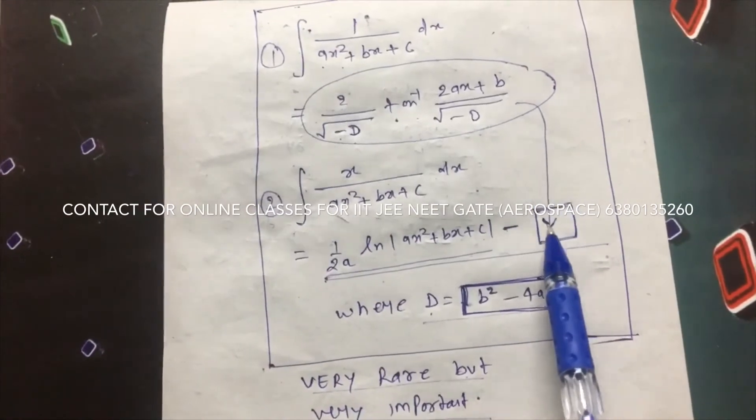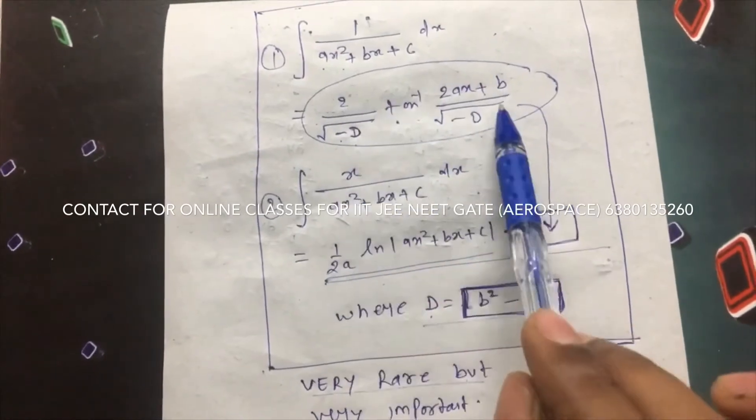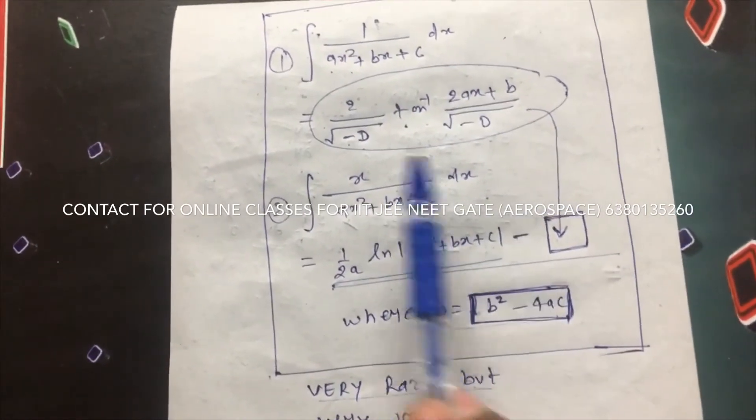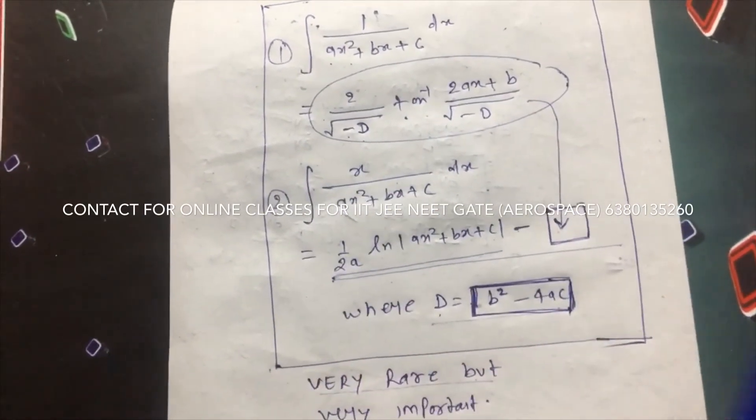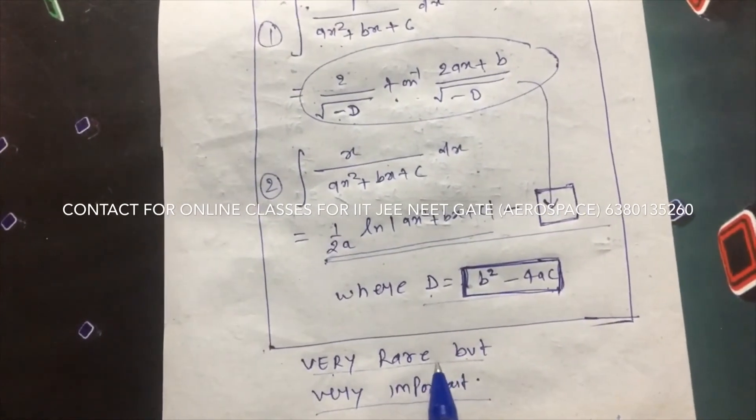Answer with minus sign. I hope you are understanding - same answer you write here with minus sign. The d value is b square minus 4ac. Take care, this formula is very rare but